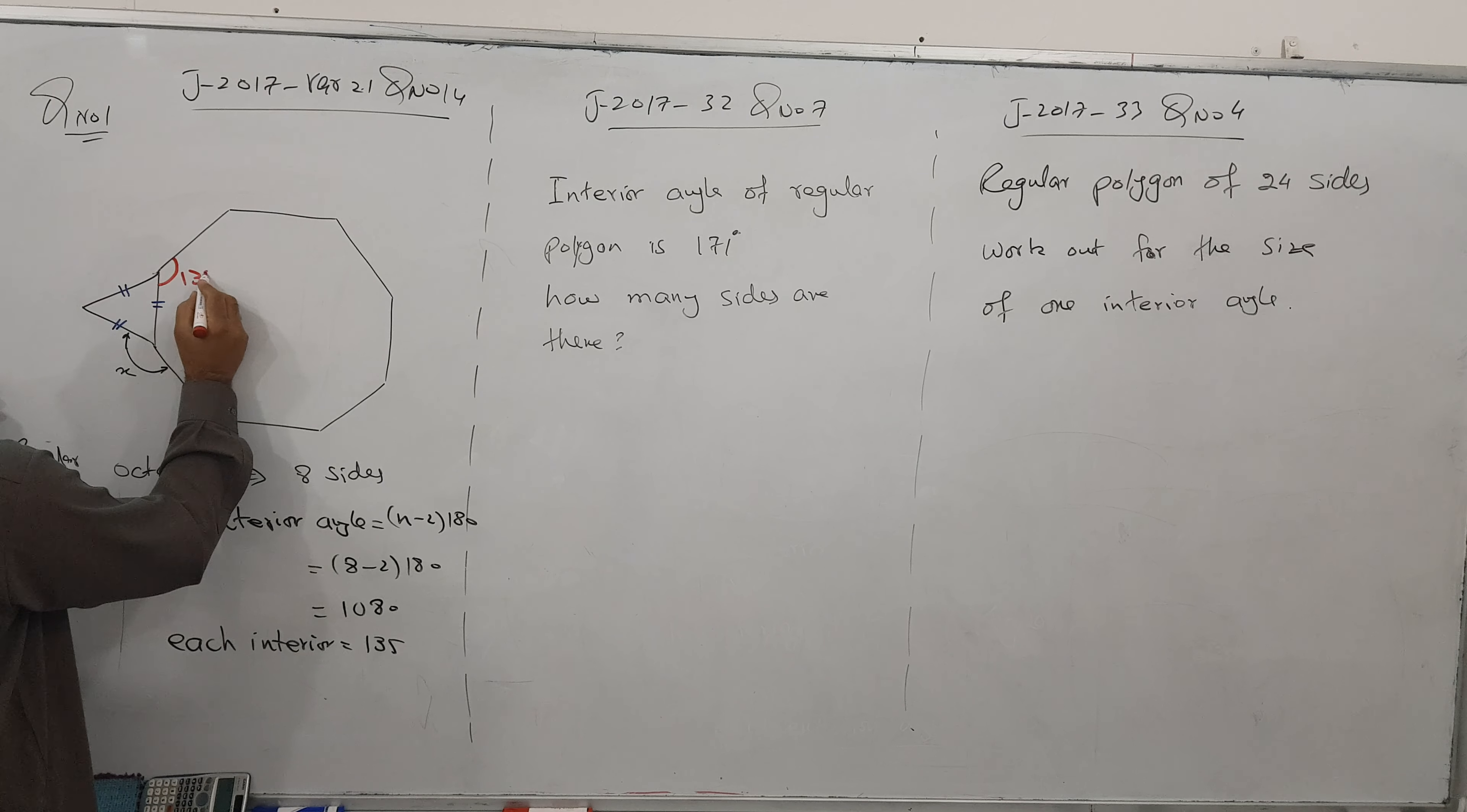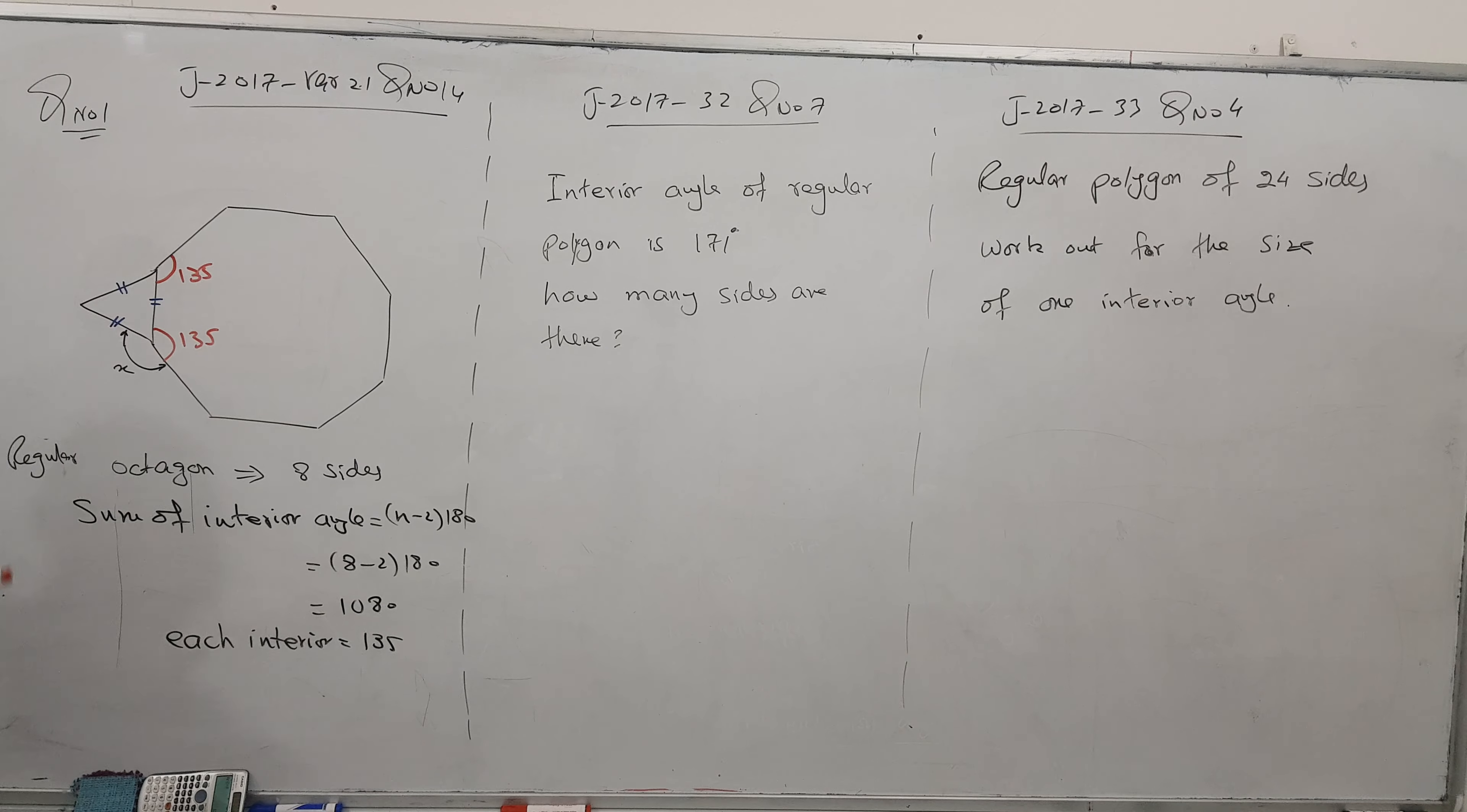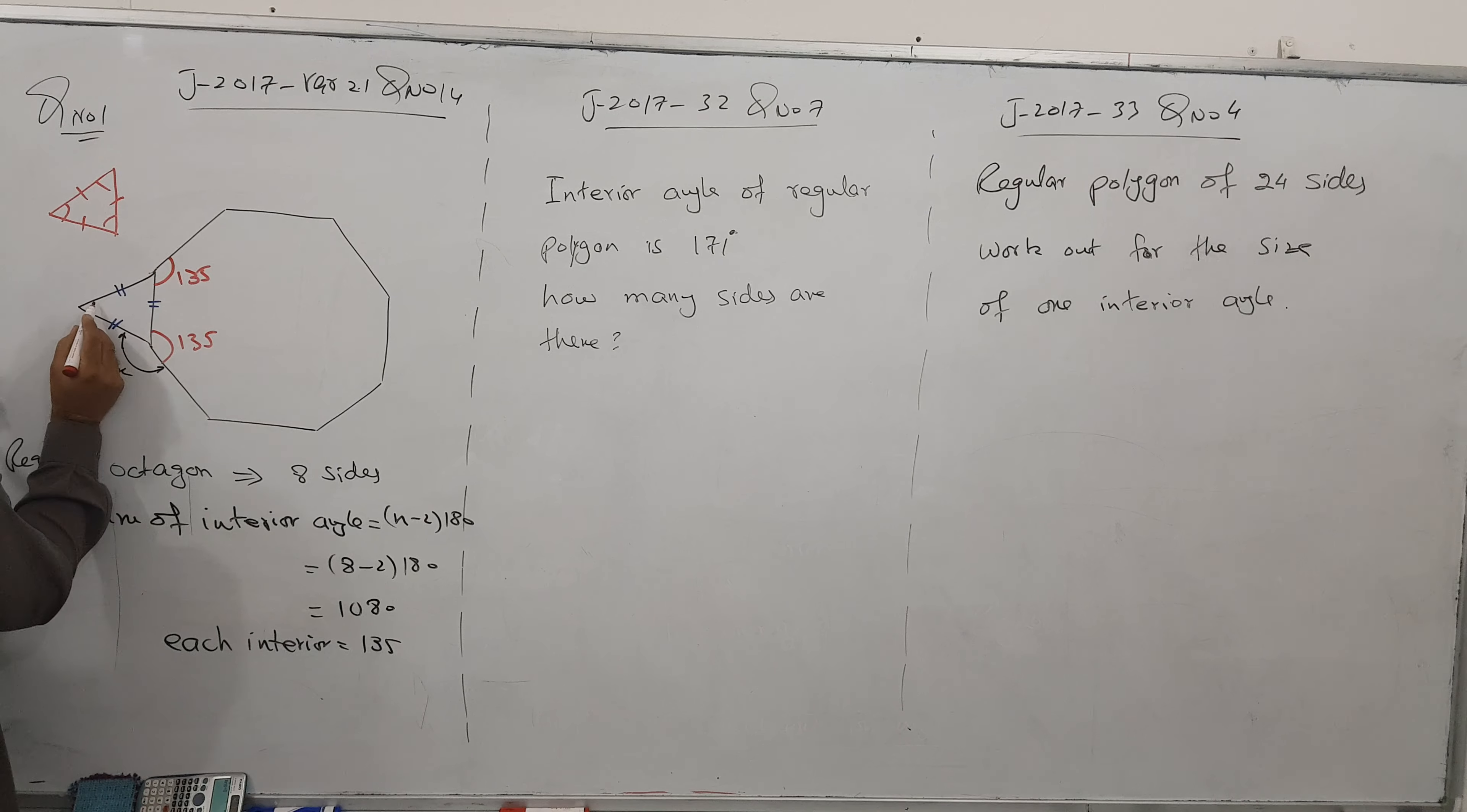This is 135, 135, 135, even this is also 135, this as well 135. And it is very clear in the question. Let me view again. This is an equilateral triangle. Equilateral triangle means all sides are equal and all angles are equal, so 60 here, 60 here, 60 here, and 60 here.